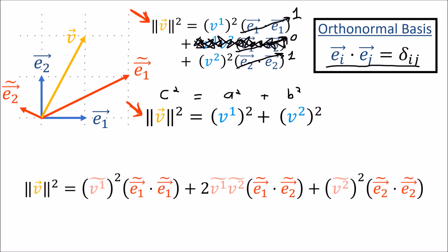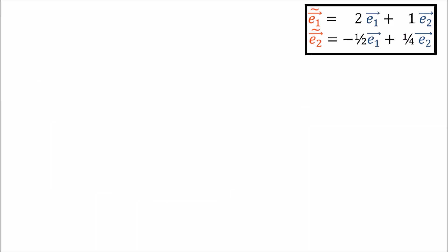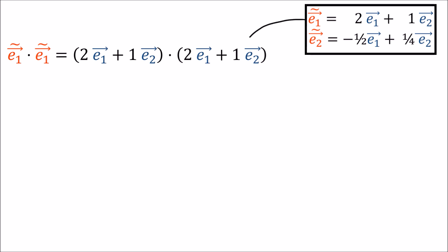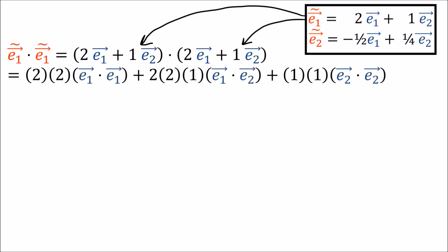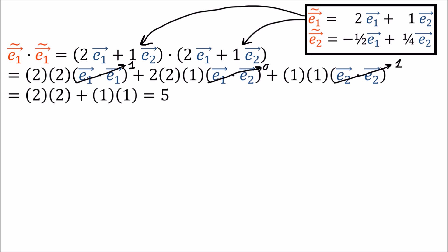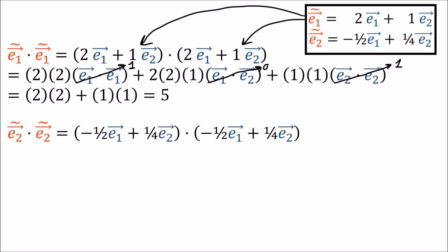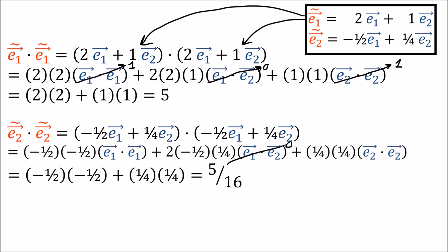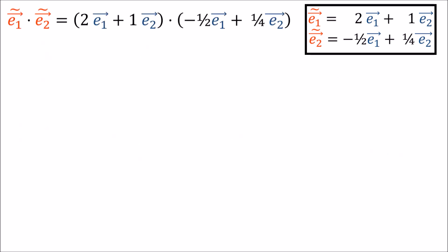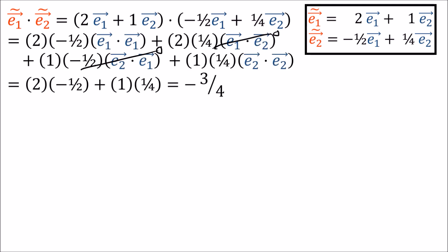But that wouldn't work in the new basis, because the basis dot products work out to different numbers. To compute these dot products, we replace the new basis vectors with linear combinations of the old basis vectors using the forward transform. We find that e1-tilde dot e1-tilde equals 5, e2-tilde dot e2-tilde equals 5/16, and e1-tilde dot e2-tilde equals negative three-quarters.